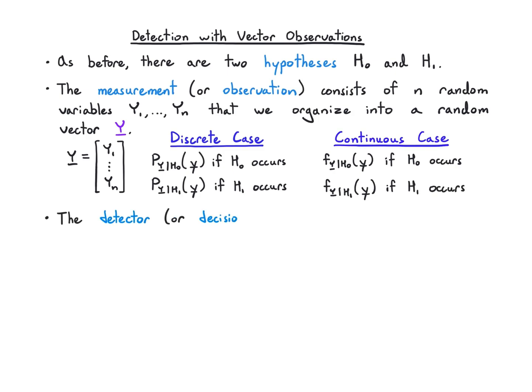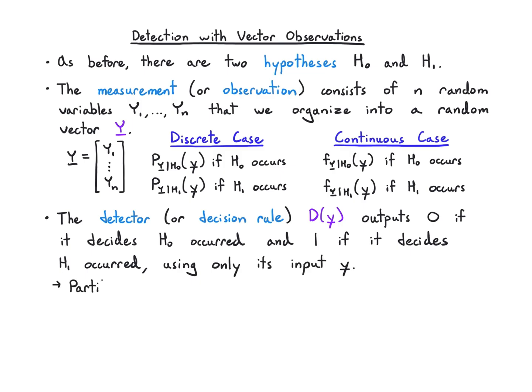We have a detector or decision rule that takes in this vector and it outputs 0 if it thinks that H0 occurred and outputs 1 if it thinks that H1 occurred using only this vector as information. This naturally partitions the range of the vector into decision regions A0 where I'm deciding 0 and A1 where I'm deciding 1.